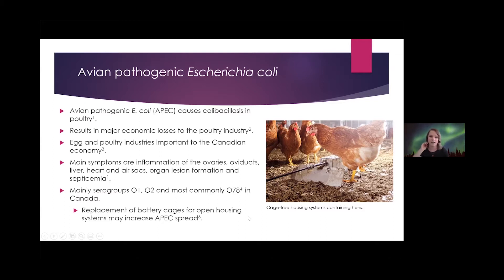Given the extent of its impact on the egg and poultry industries, it has a significant impact on the Canadian economy. It's primarily composed of O1, O2, and O78 serogroups. It's thought that as battery cages are phased out in favor of more open housing systems, the incidence of this disease will only increase over time.